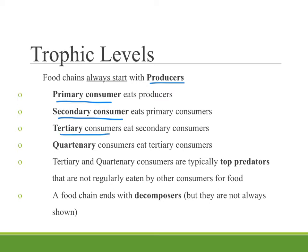Tertiary is another way of saying third. And at the fourth level — a term you're probably not familiar with — quaternary consumers are the fourth level. The tertiary and quaternary consumers are typically the top predators in a food chain. They're organisms that are not regularly eaten by other consumers for food, though in the case of an injured or old organism, they may actually be eaten by something else. But generally these are our top predators.